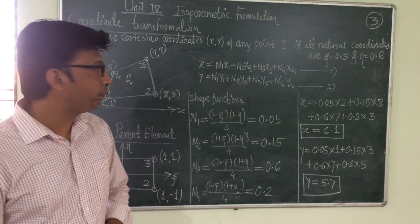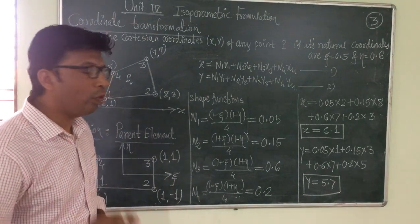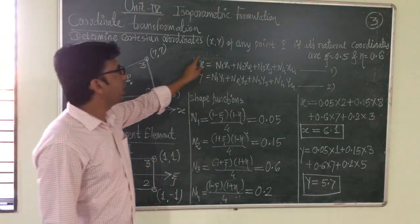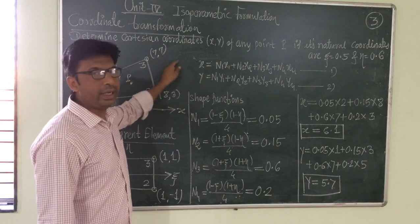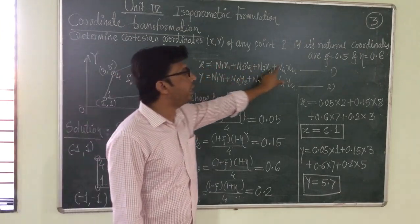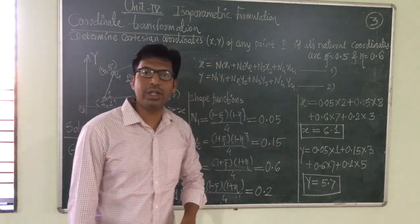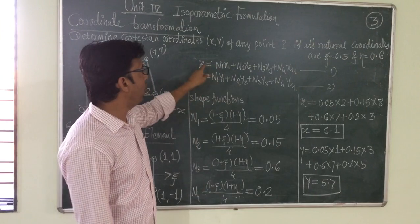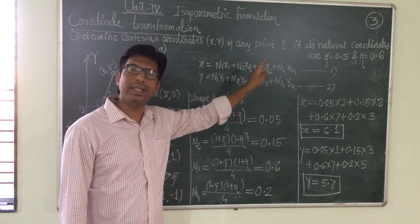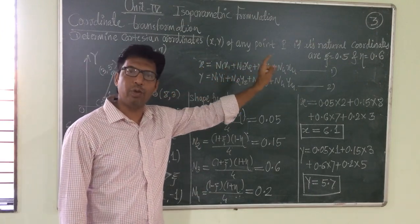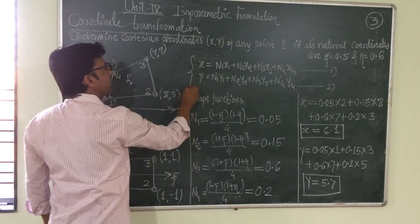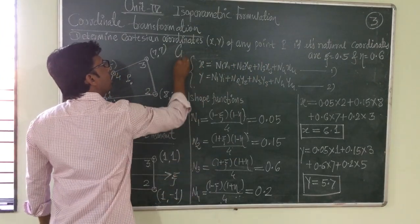In isoparametric formulation, the Cartesian coordinates (geometry) are represented in terms of shape functions. So x equals N1·x1 + N2·x2 + N3·x3 + N4·x4, and similarly y equals N1·y1 + N2·y2 + N3·y3 + N4·y4. These are called the geometry equations.